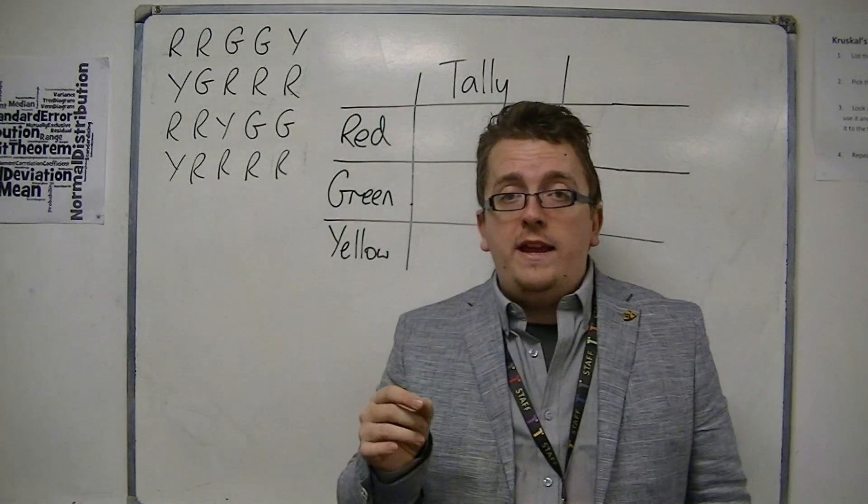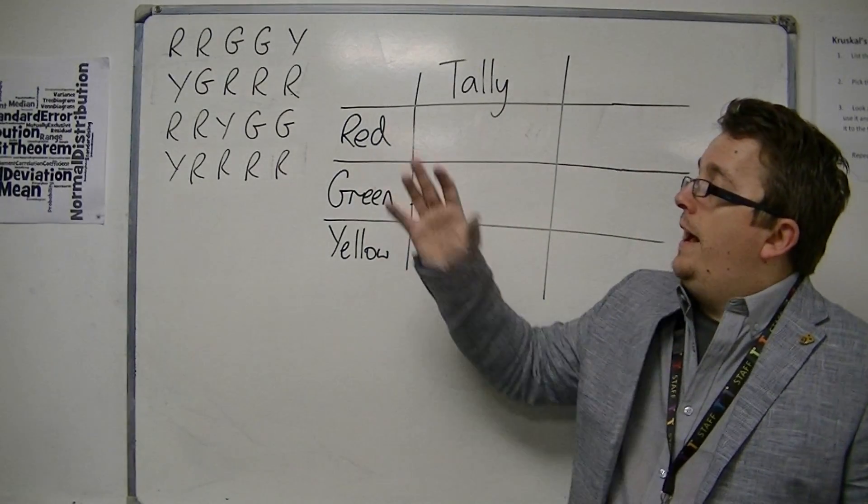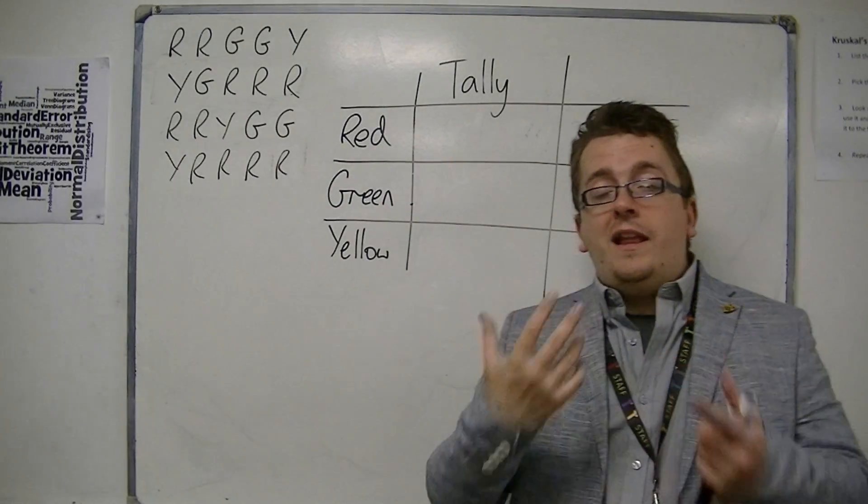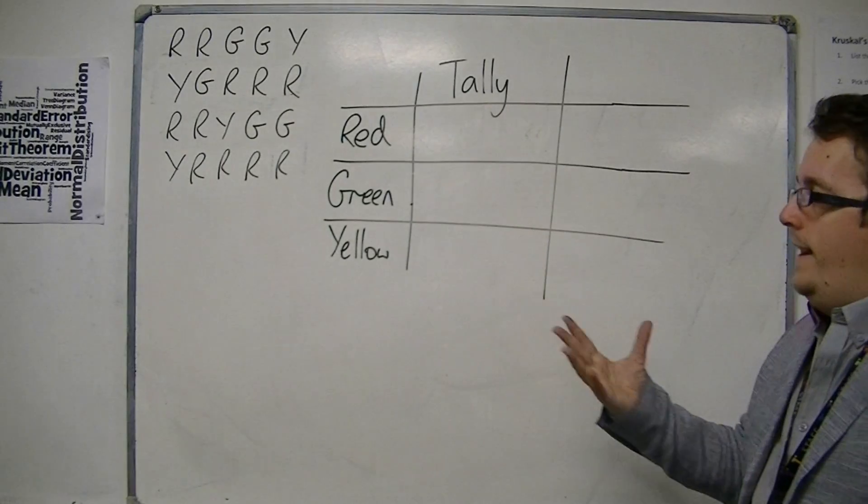I'm just writing down R for red, G for green, and Y for yellow. And what I want to do is I want to collate this data, and I'm going to collate it into a tally chart.